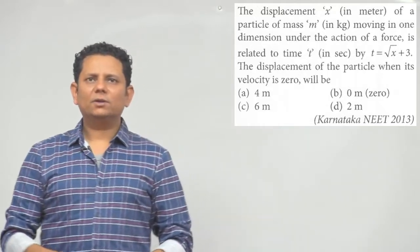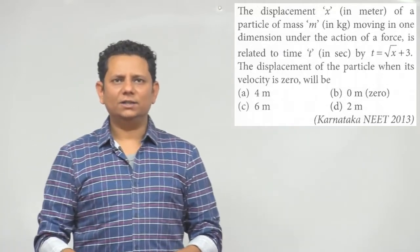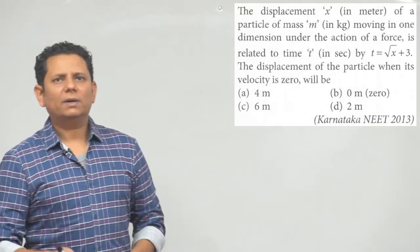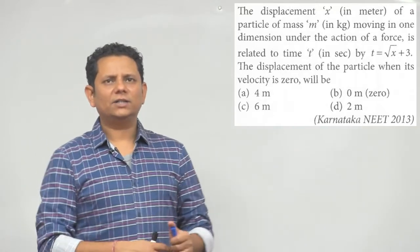The question is: what is the displacement of the particle when its velocity is zero? This is very simple. The four options are 4 m, 0 m, 6 m, or 2 m.